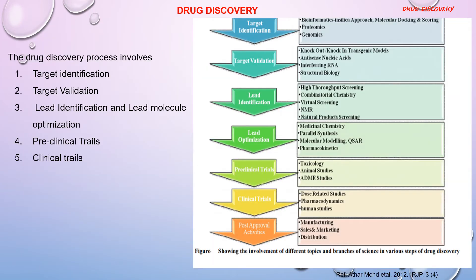The drug discovery process involves target identification, target validation, lead identification and optimization, preclinical trials, and clinical trials. The figure here summarizes the various approaches involved in each step.